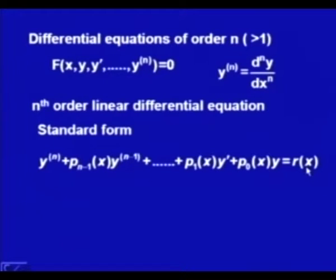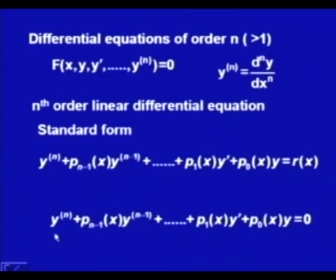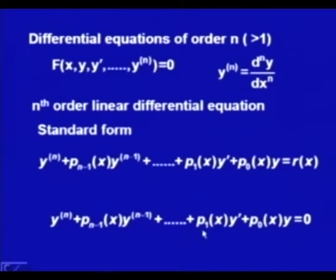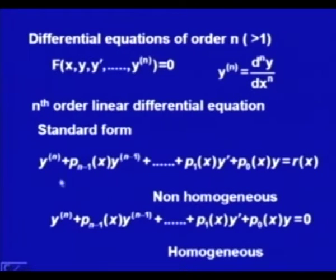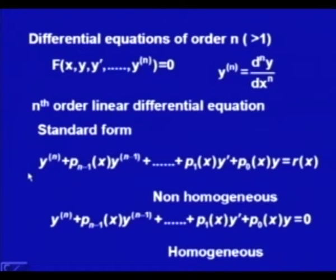If the right-hand side is identically zero, the equation y^(n) + p_{n-1}(x)y^(n-1) + ... + p₁(x)y' + p₀(x)y = 0 is called the homogeneous linear equation of order n. When r(x) ≠ 0, it is called non-homogeneous. This is the standard form since the coefficient of the nth derivative y^(n) is 1.